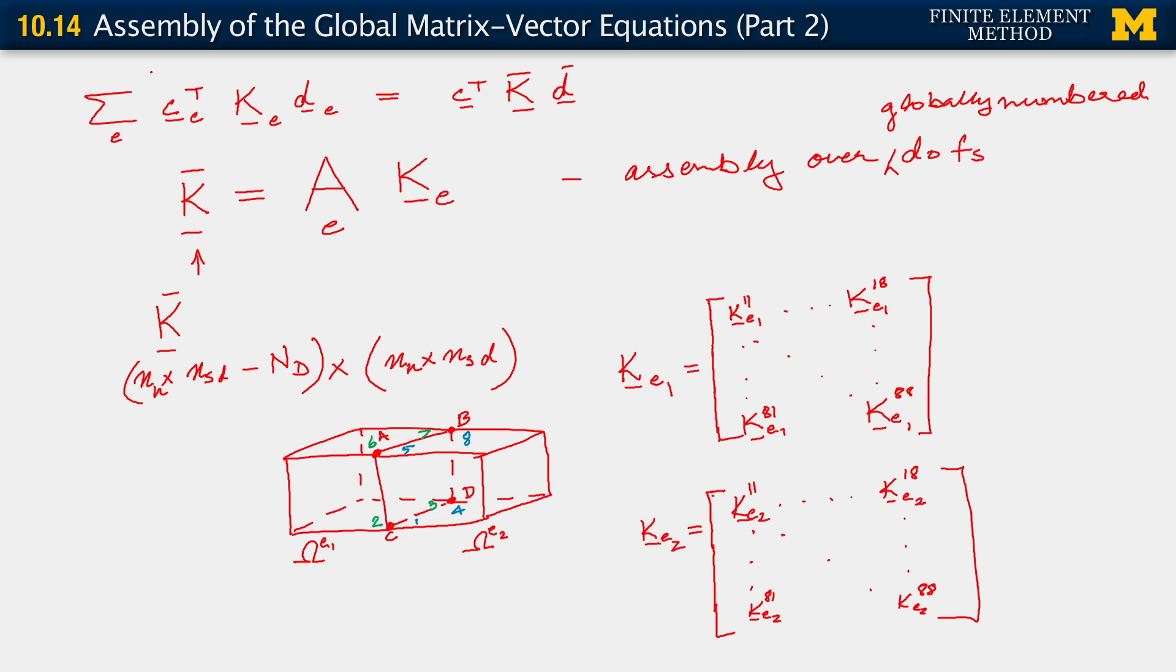With this in mind, I would like to go into our global stiffness matrix and just talk about where the matrices are going to be added on. I should mention here of course that each of the entries in these K1 and K2 matrices is not a scalar. What is it? Each of these is a 3 by 3 matrix, and that's the same for K2.